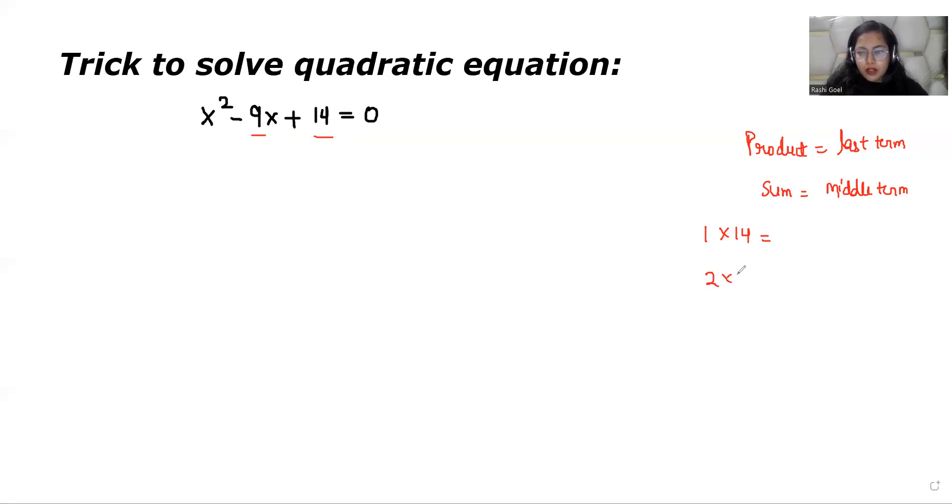So again 2 and 7 are the factors of 14 and 2 plus 7 also 9 the middle term. So that is correct.